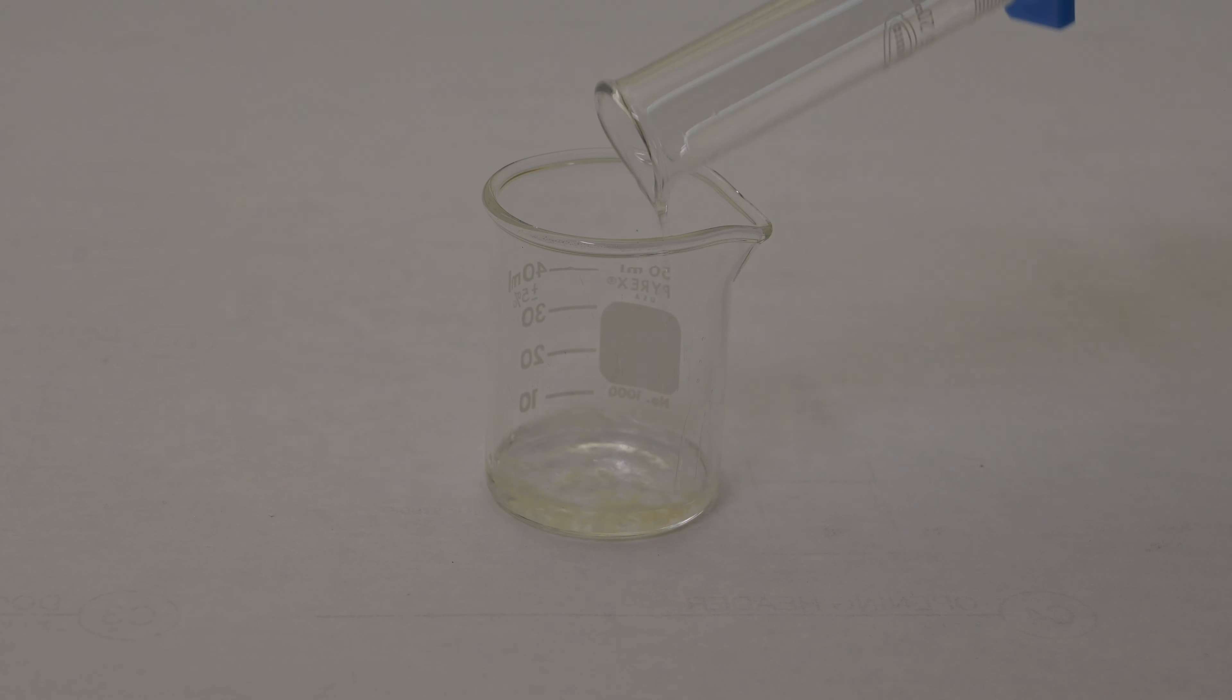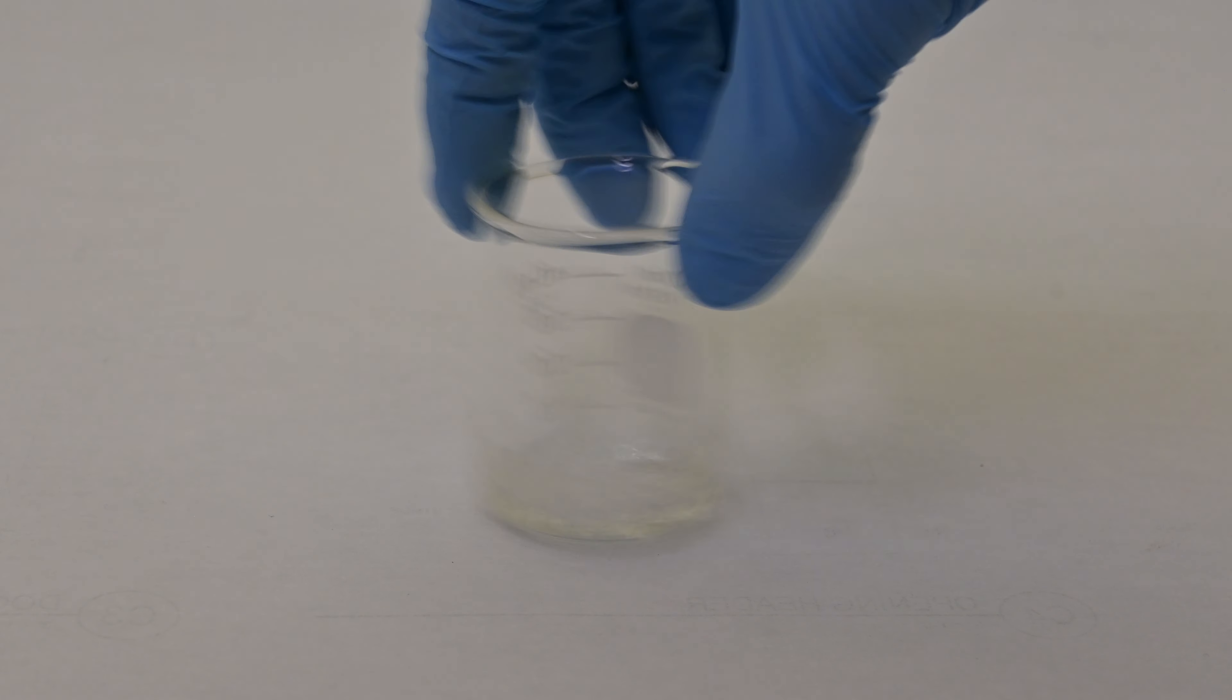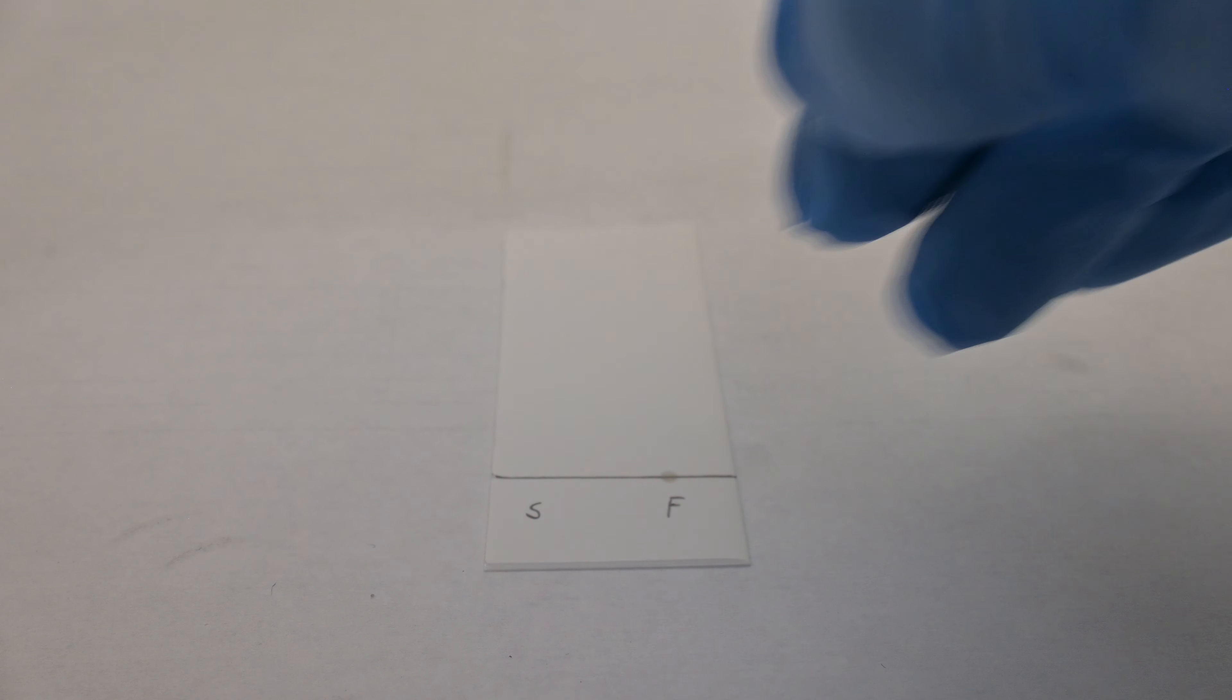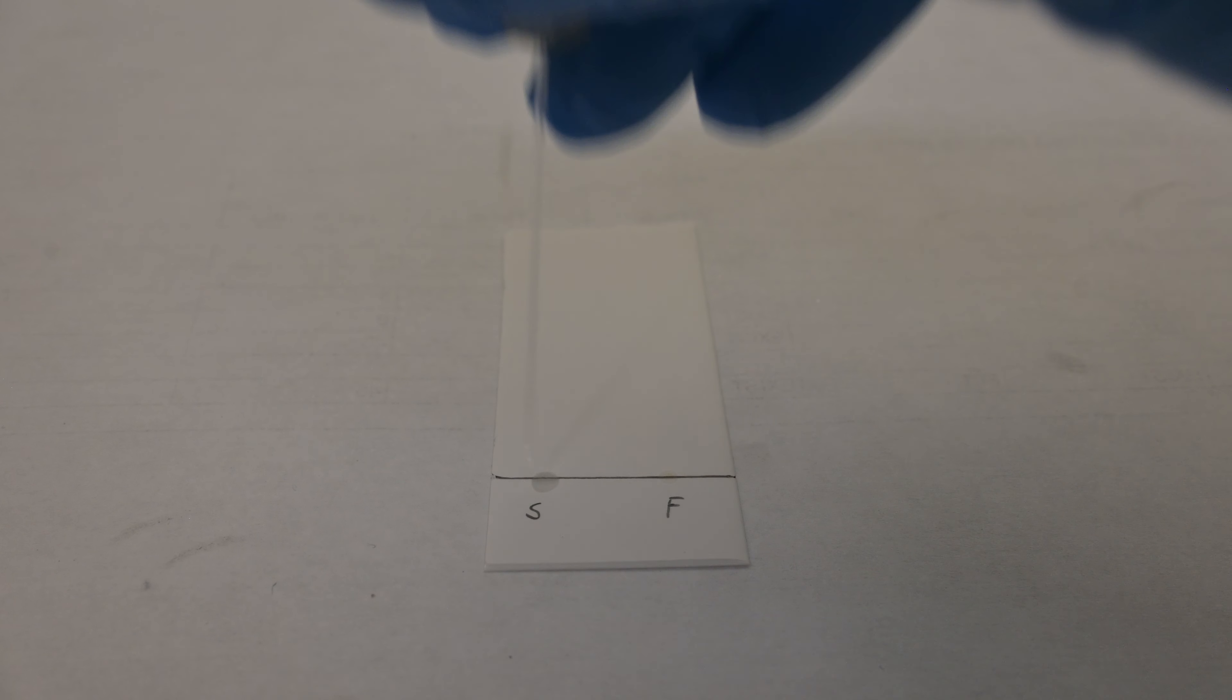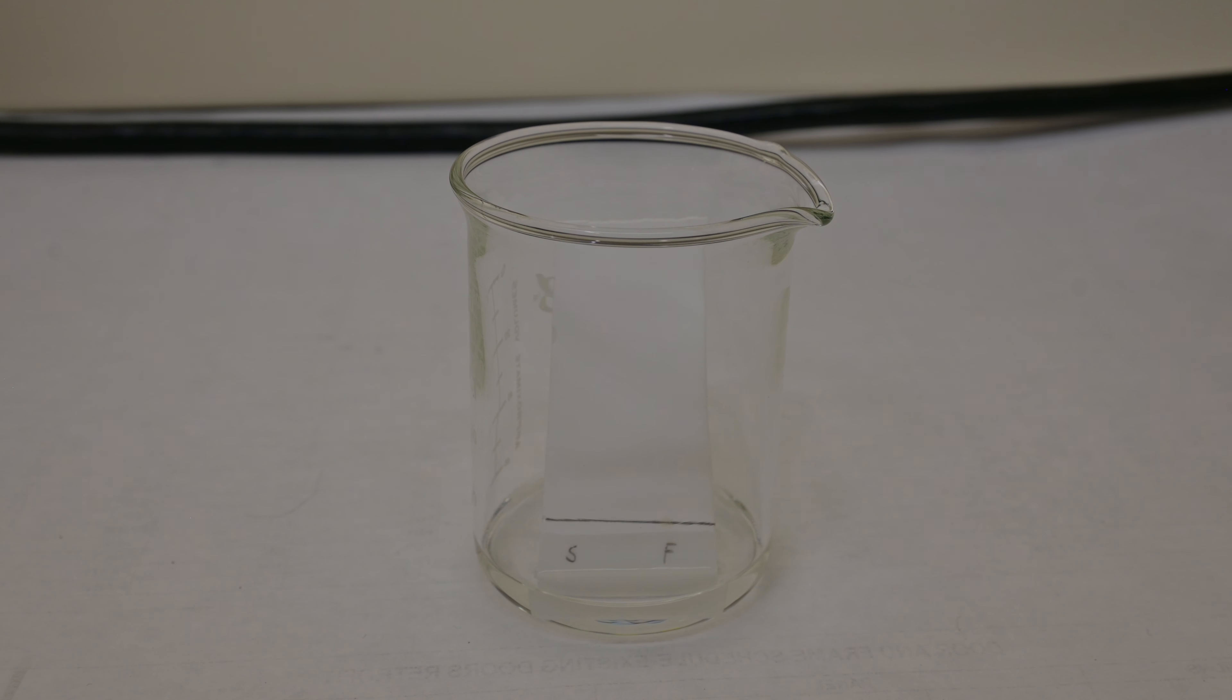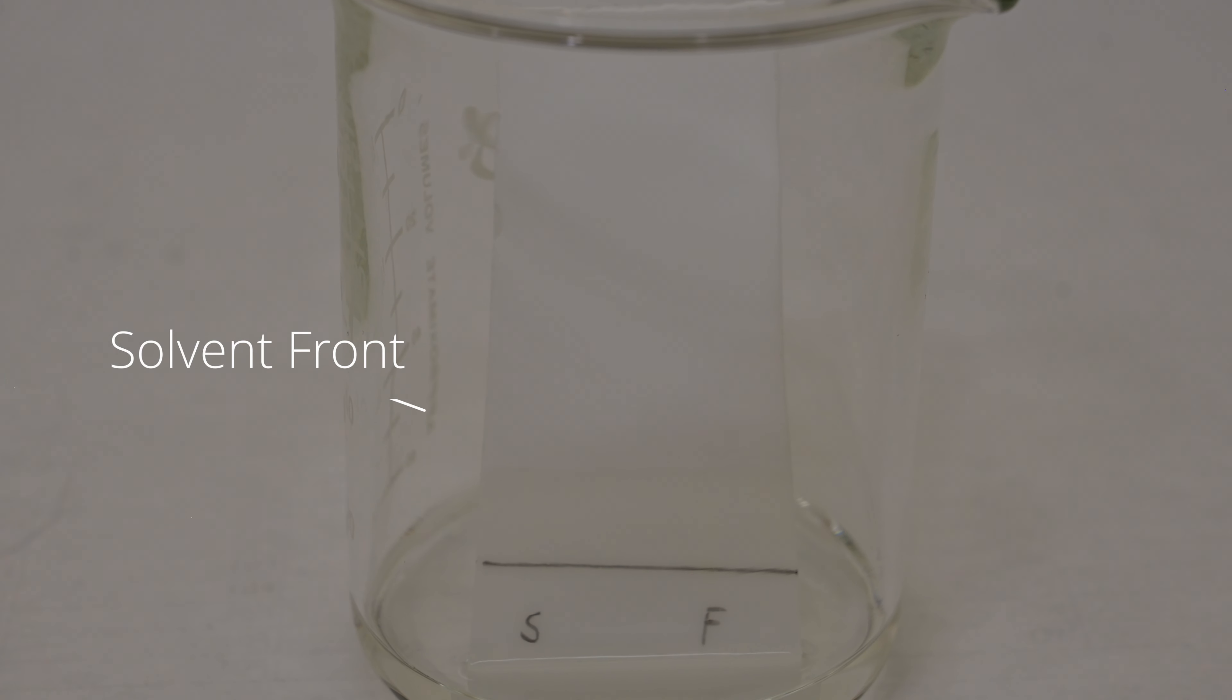To perform TLC, we start by preparing a small amount of starting reagent, M-toluic acid, in an appropriate solvent like dichloromethane, DCM, to create a dilute solution. Then we apply small dots of this solution and the reaction solution to the TLC plate coated with silica. Placing the TLC plate into a beaker containing some more DCM, which will cause the solvent to ascend the plate by capillary action, carrying the compounds with it. Different compounds will move up the plate at different extents based on their polarity, resulting in distinctive spots on the TLC plate.